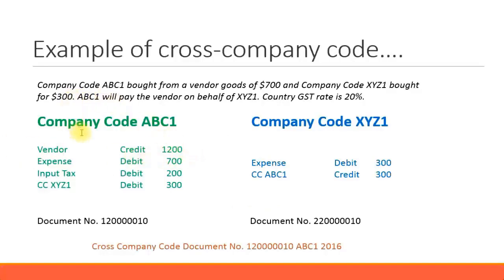We have two company codes: company code ABC1 and company code XYZ1, both in the same SAP system. Imagine ABC1 is the parent company and XYZ1 is the subsidiary. Company code ABC1 bought from a vendor and will pay the vendor on behalf of XYZ1. The country tax rate is 20%, so the vendor sends an invoice for $1,200 — that is $1,000 worth of goods plus 20% tax of $200.